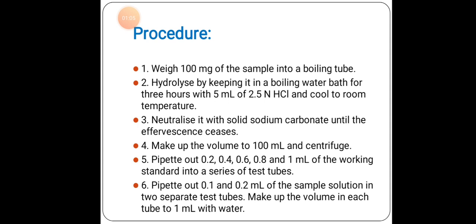Procedure: weigh 100 mg of the sample into a boiling tube. Hydrolyze by keeping it in a boiling water bath for 3 hours with 5 ml of 2.5 normal HCl, and cool to room temperature. Neutralize with solid sodium carbonate until the effervescence ceases. Make up the volume to 100 ml and centrifuge.